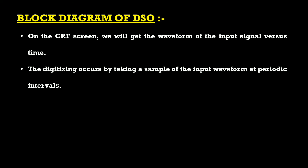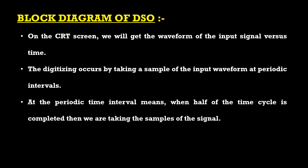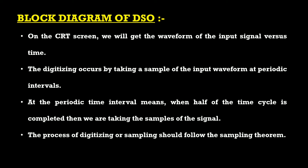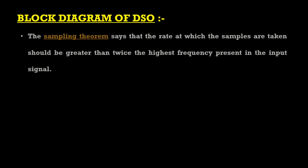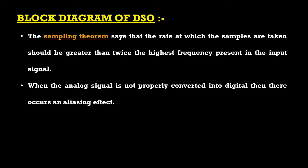Digitizing occurs by taking samples of the input waveform at periodic intervals — when half of the time cycle is completed, samples are taken. This process must follow the sampling theorem, which states that the rate at which samples are taken should be greater than twice the highest frequency present in the input signal.